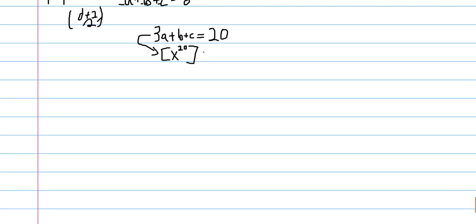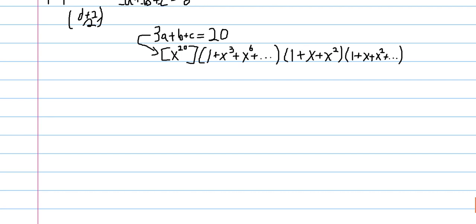The product is (1 plus x cubed plus x to the 6 plus ...) times (1 plus x plus x squared plus ...) and basically that last factor two times. We want the coefficient of x to the 20, and this is like what I did in the first video on generating functions — we wanted to figure out how many ways we could make things add up to something, and we figured polynomials were the best way to do that.